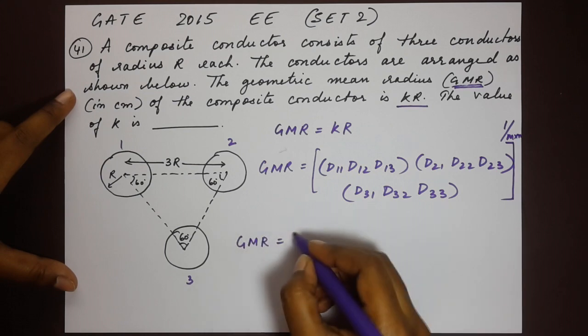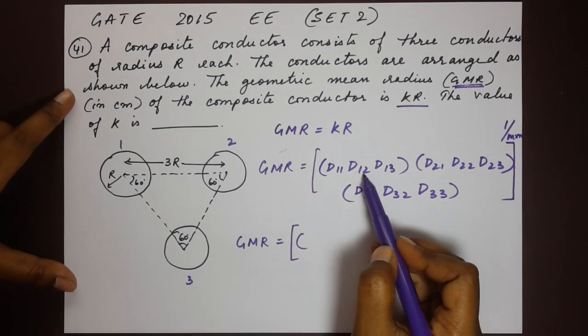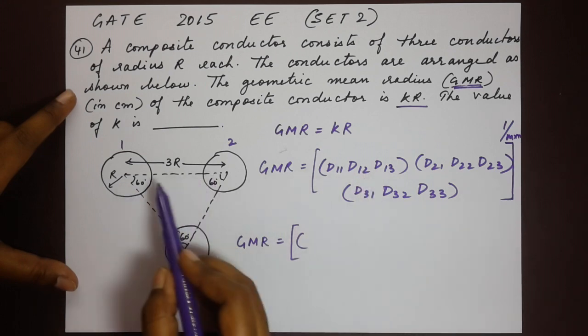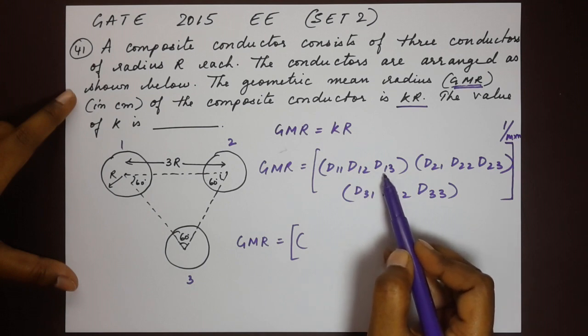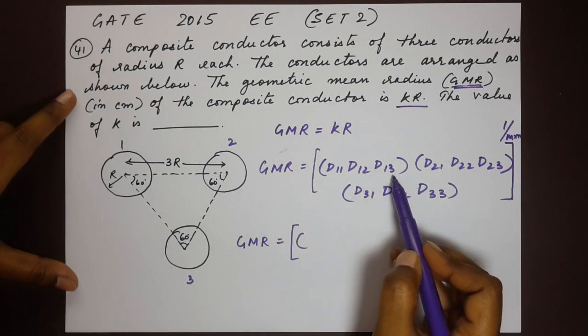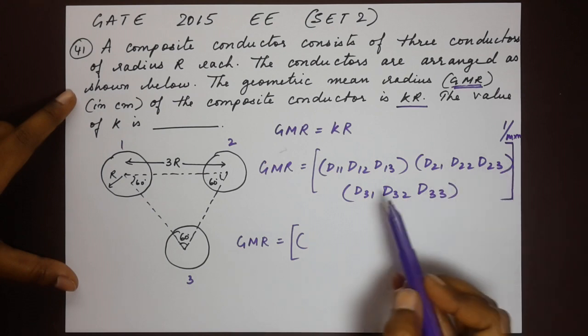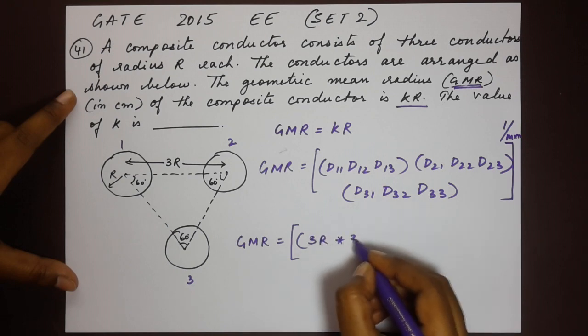So GMR equals - first we have d12. Let's look at the distances between the conductors first. So that's d12, d13 - 3r, 3r. d21, d23 is 3r, 3r. d31, d32 is 3r, 3r. So that's 3r into 3r.